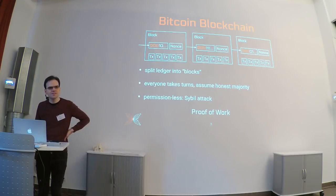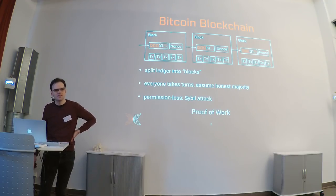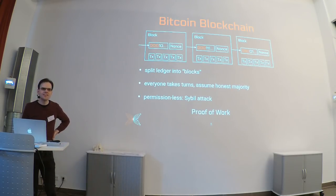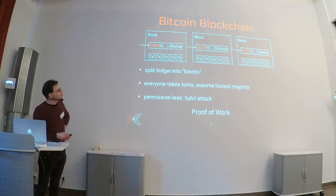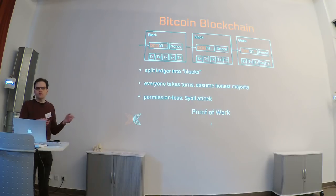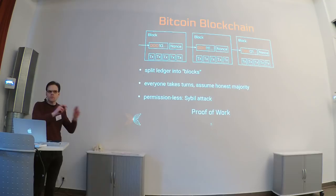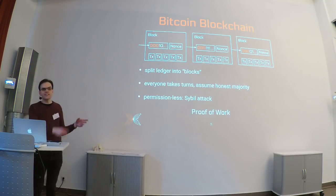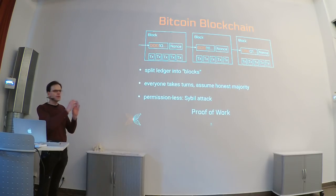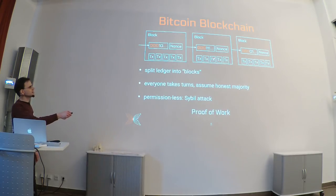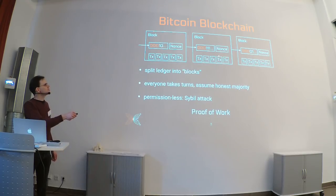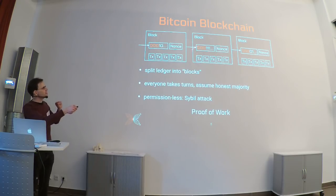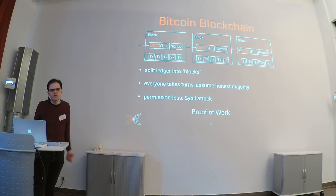In response to a question about chain growth: the chain grows basically all the time because there are rewards for creating blocks. There are two kinds: new coins created with every block (inflation), and transaction fees. Everybody tries to produce blocks as fast as possible because there's a permanent race. Each block includes the hash of the last block, and as soon as another party publishes a block, the contents change and you have to start anew. Even if there are no transactions, miners create empty blocks to collect the block reward.